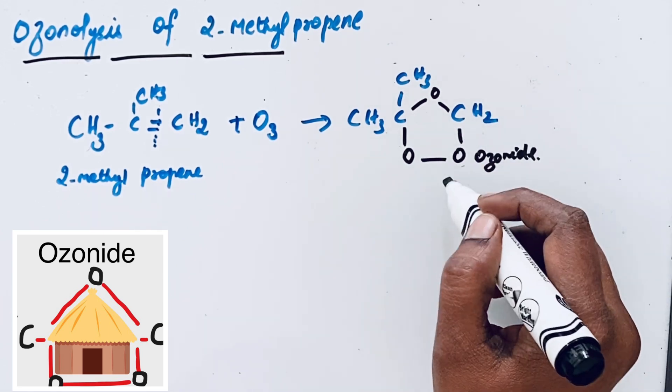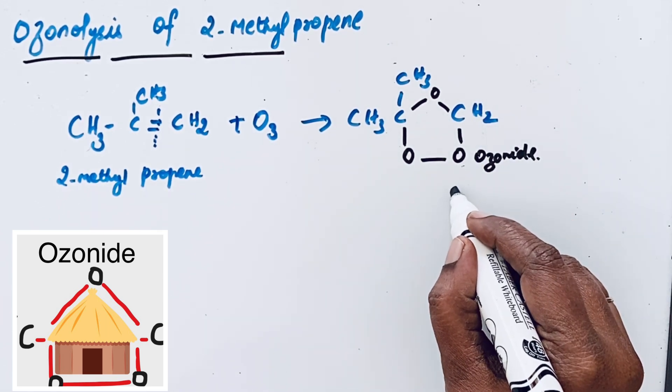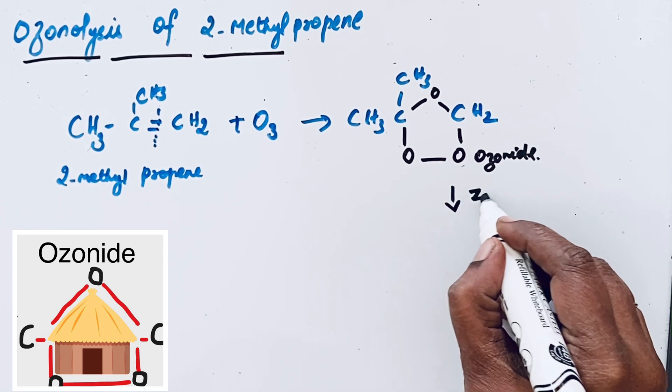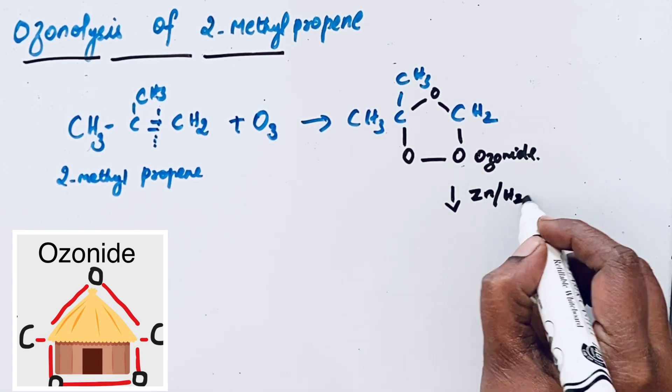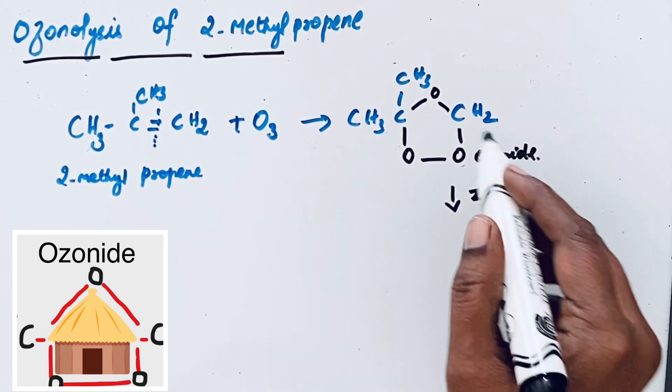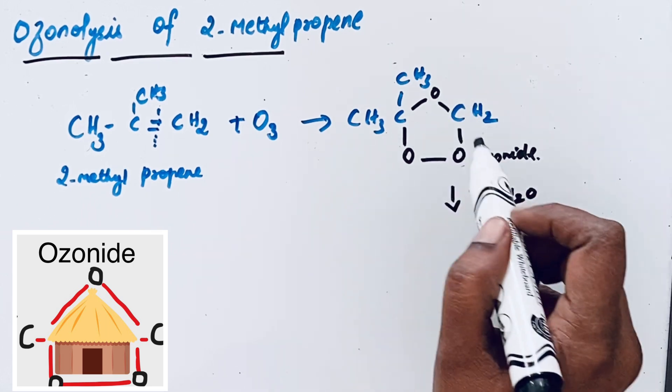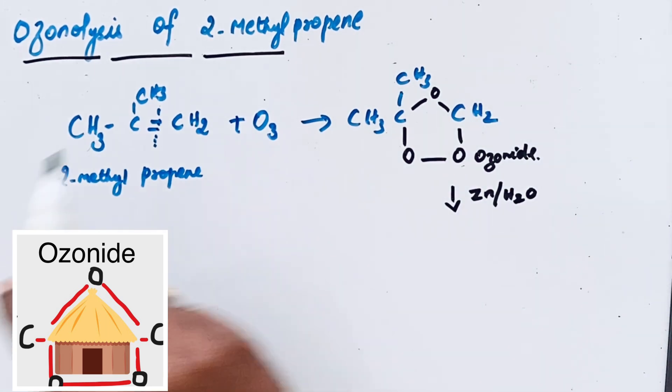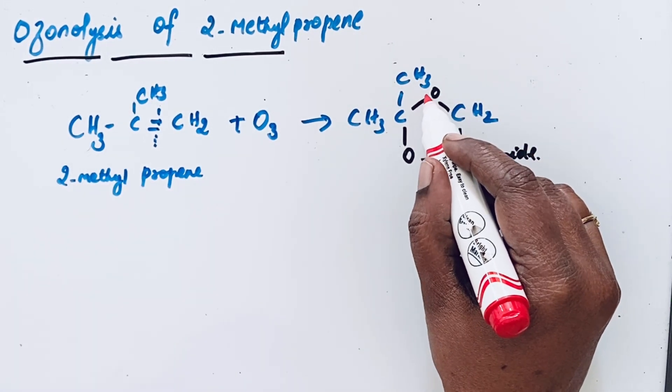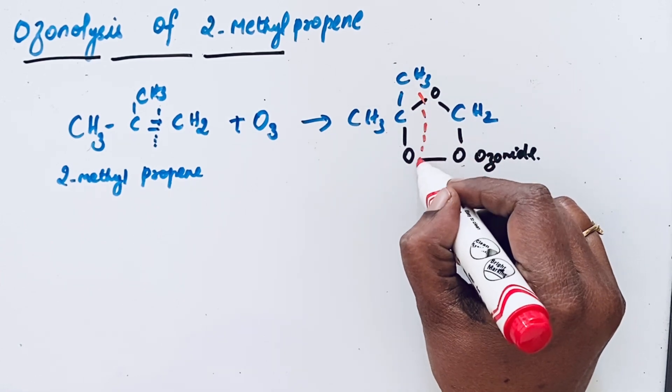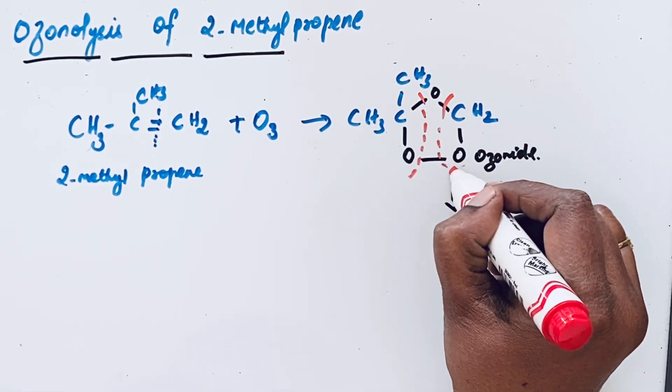Now this hut is broken into simpler molecules by zinc with H2O. Zinc is a reducing agent which takes oxygen from this intermediate ozonide. This ozonide breaks into 2 simple molecules.